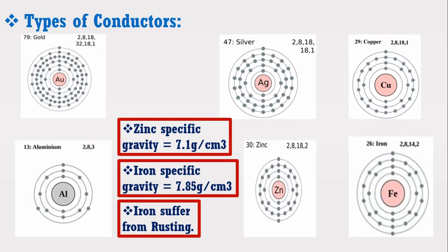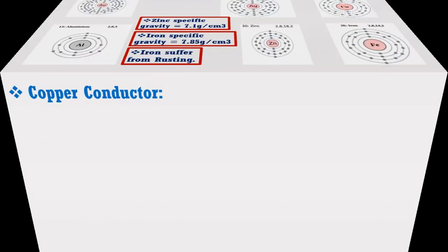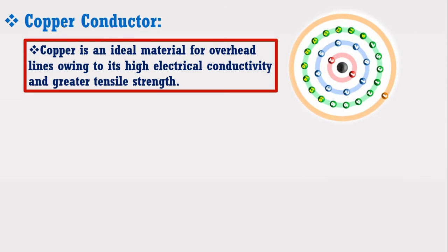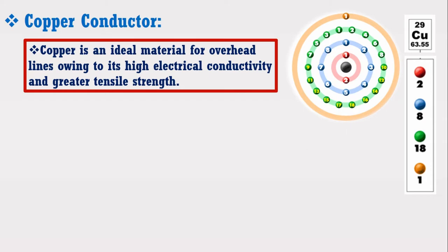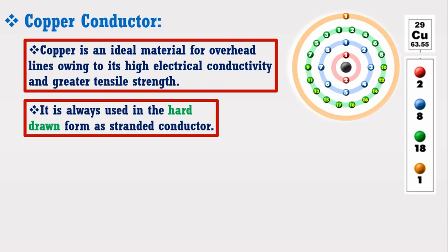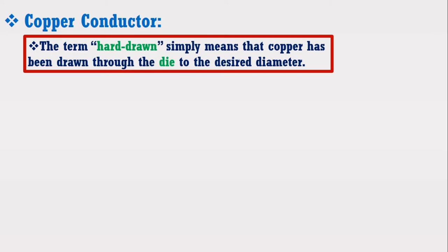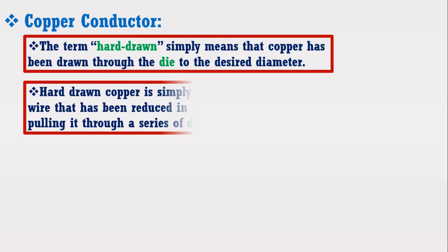From this discussion, we have only two choices — copper and aluminum — that can be used for overhead transmission lines. Copper is an ideal material for overhead lines owing to its high electrical conductivity and greater tensile strength. It has 29 electrons total with only one electron in its outer shell. It is always used in the hard drawn form as a stranded conductor. The term hard drawn simply means that the copper has been drawn through a die to the desired diameter.